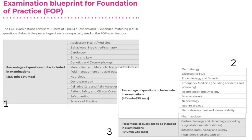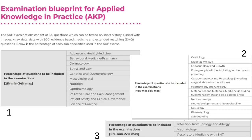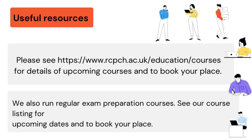The examination blueprint for Theory and Science is also divided into 3 groups: Group 1 is 28% to 40%, Group 2 is 36% to 43%, and Group 3 is 24% to 29%. The examination blueprint for Applied Knowledge in Practice is also divided into 3 groups: Group 1 minimum 21% to maximum 34%, Group 2 minimum 48% to maximum 58%, and Group 3 is 18% to 22%.